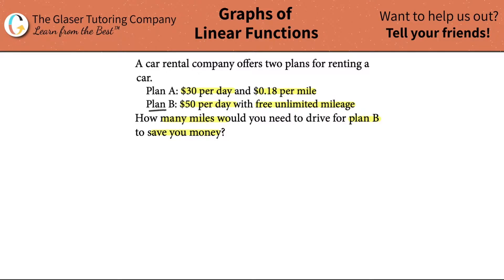Plan B — $50 per day — would be the plan to go with, even though it's a little more than $30, because you get free unlimited mileage. But if you're not going to drive too many miles, then Plan A might be better. If you know how long your trip is, you can actually figure out definitively whether you want Plan A or Plan B. So how do we do this? We use math.